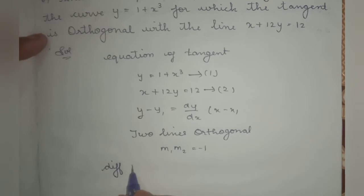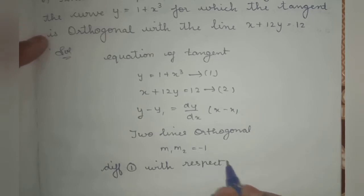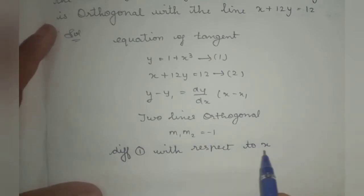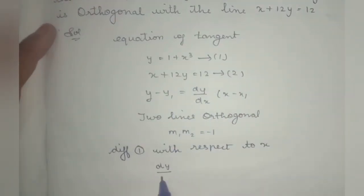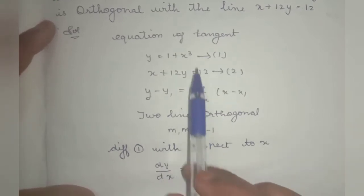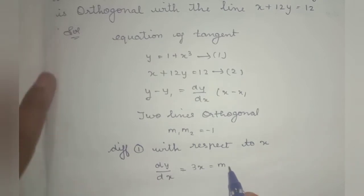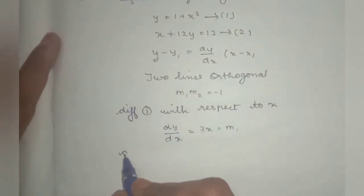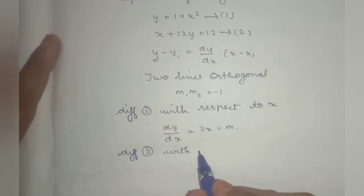Differentiate equation 1 with respect to x. dy/dx = 0 + 3x² = 3x². This is m1.